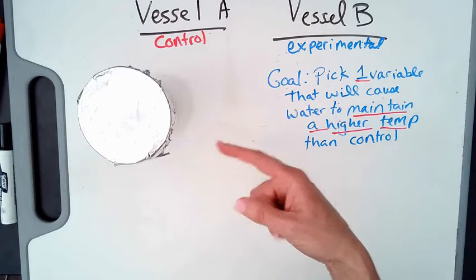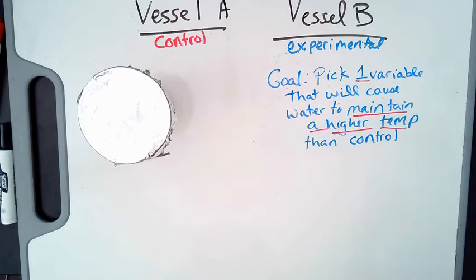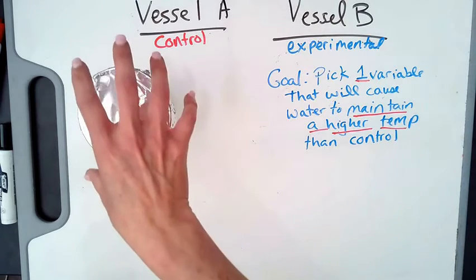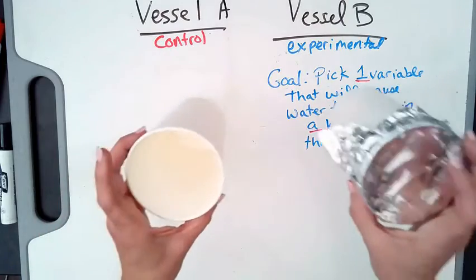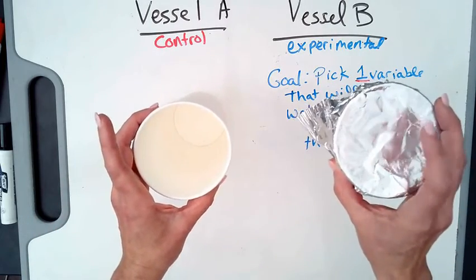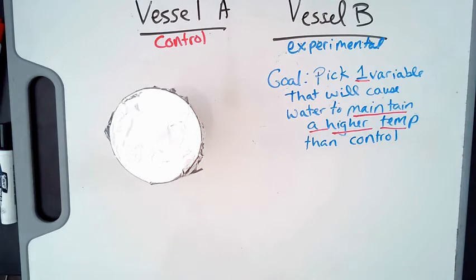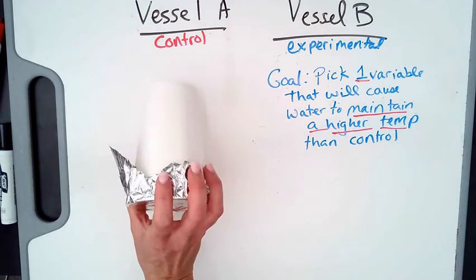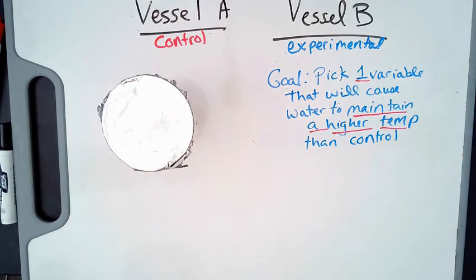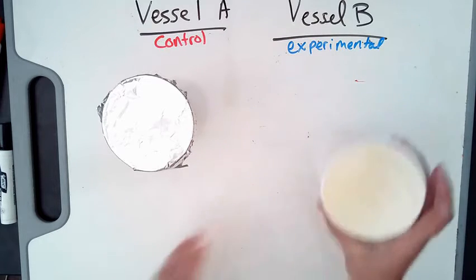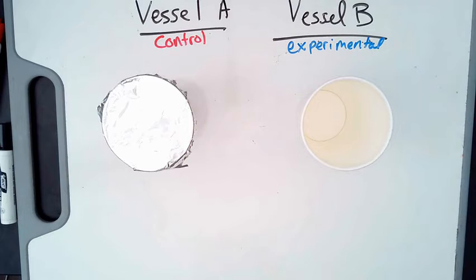Now again, it's an experiment, so it might turn out at the end of the experiment that you were wrong about the one variable, but that's okay. So what do I mean about one variable? Well, if you recall, yesterday the only difference between the control and experimental was the fact that there was a lid. So today your control is the vessel that you used yesterday with the lid. All right, well pick one thing. We've given you a list.